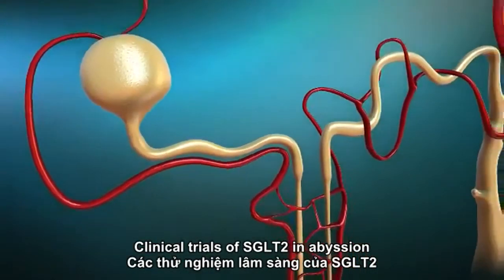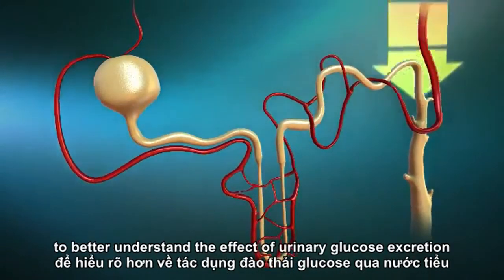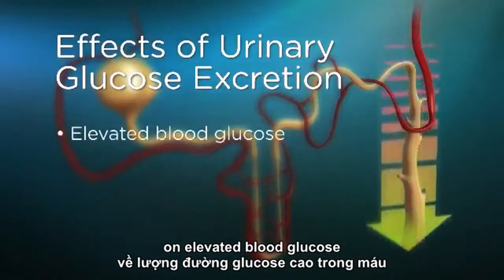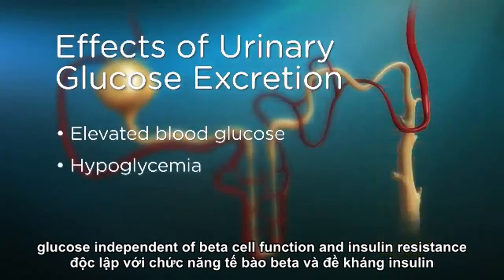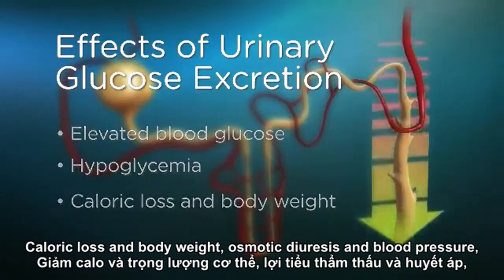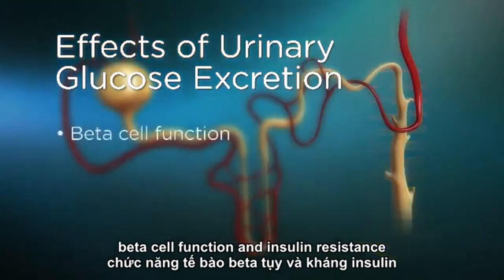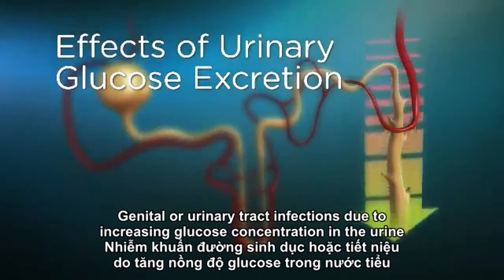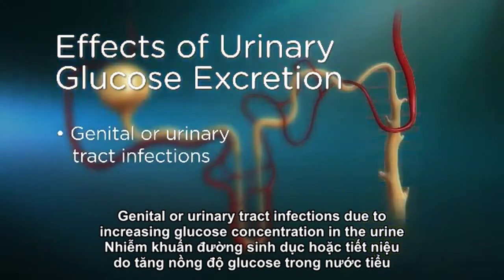Clinical trials of SGLT2 inhibition are currently ongoing in patients with type 2 diabetes to better understand the effect of urinary glucose excretion on elevated blood glucose, the risk of hypoglycemia given the action on glucose independent of beta cell function and insulin resistance, caloric loss and body weight, osmotic diuresis and blood pressure, beta cell function and insulin resistance, and genital or urinary tract infections due to increasing glucose concentration in the urine.